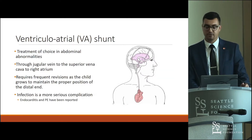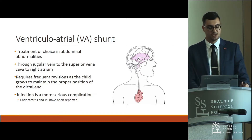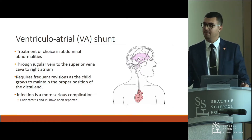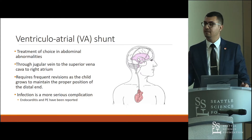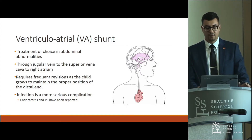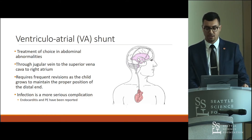The ventriculoatrial (VA) shunt is the treatment of choice when VP or VPL shunts cannot be used. It tunnels through the jugular vein to the superior vena cava, with the distal tip in the right atrium. Downsides include requiring more revisions as the child grows to maintain tip position, more serious infection risk including endocarditis, pulmonary embolism risk since the shunt is in the bloodstream, and potential for sepsis.